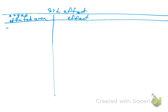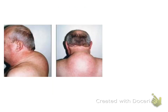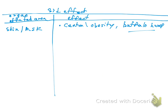Starting with the skin and musculoskeletal system: patients are going to have central obesity, and with central obesity they can also develop a buffalo hump — here you can see the elevation that represents the buffalo hump. Also, in terms of skin and musculoskeletal side effects, the skin is going to atrophy, and the patient can also develop bruisability.